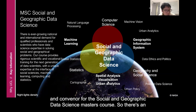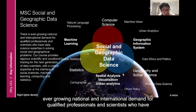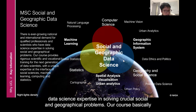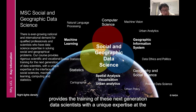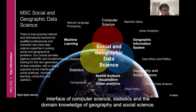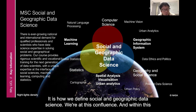There's an ever-growing national and international demand for qualified professionals and scientists who have data science expertise in solving crucial social and geographical problems. Our course provides the training of these next-generation data scientists with a unique expertise at the interface of computer science, statistics, and the domain knowledge of geography and social science. This is how we define social and geographic data science.